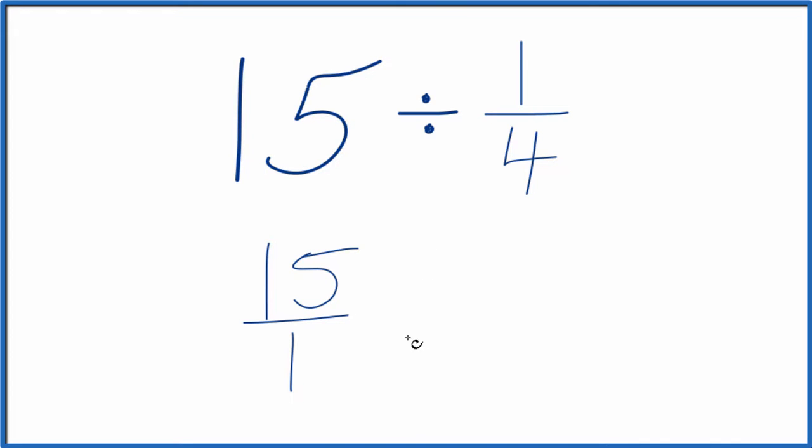Next, instead of division, let's multiply this 15 over 1 times the reciprocal of 1 fourth. To take the reciprocal of a fraction, you move the numerator to the bottom and the denominator to the top. So we have 4 over 1. 4 over 1, that's the reciprocal of 1 fourth.